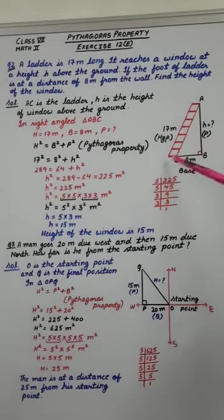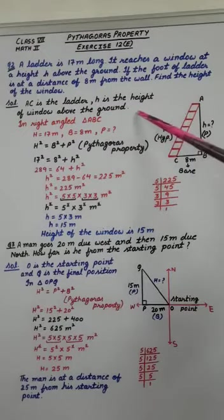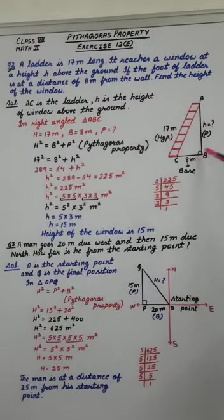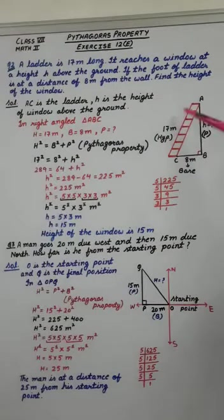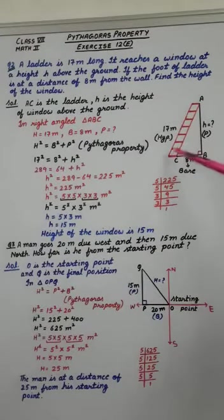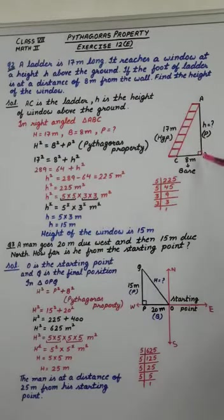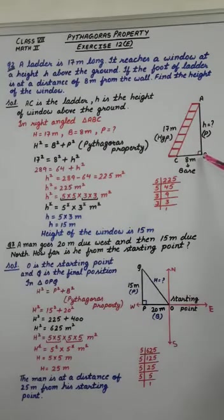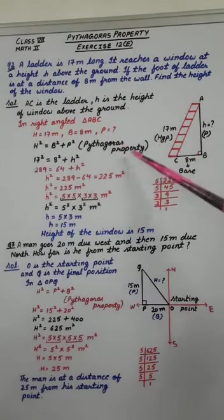So, here AC is the ladder. H is the height of window above the ground. This is a right angled triangle in which 17 meter, that means length of this ladder, that is hypotenuse, because it is opposite to 90 degree. Then this is base and this is perpendicular. Let's use Pythagoras' property.